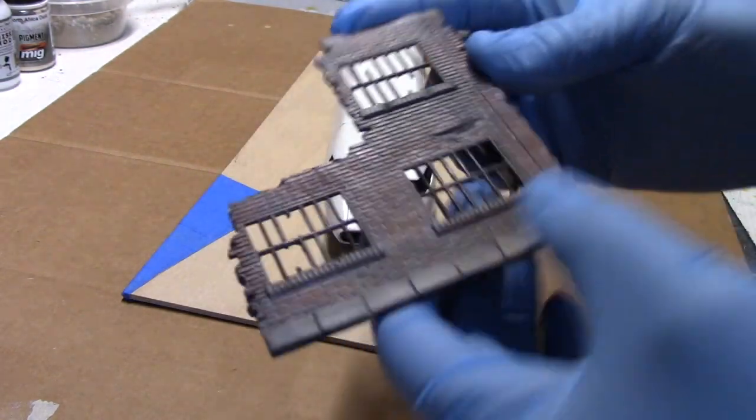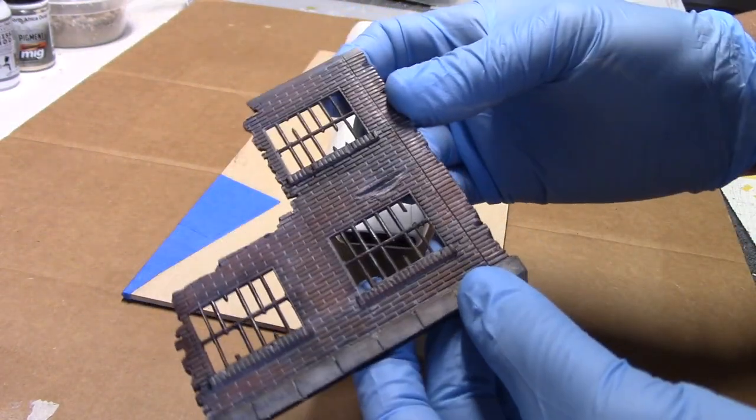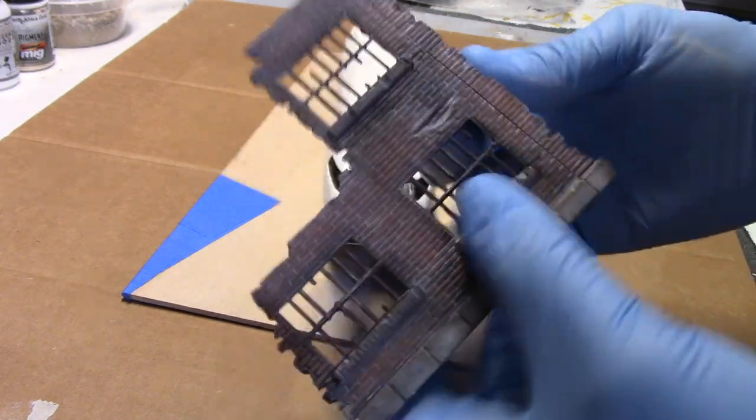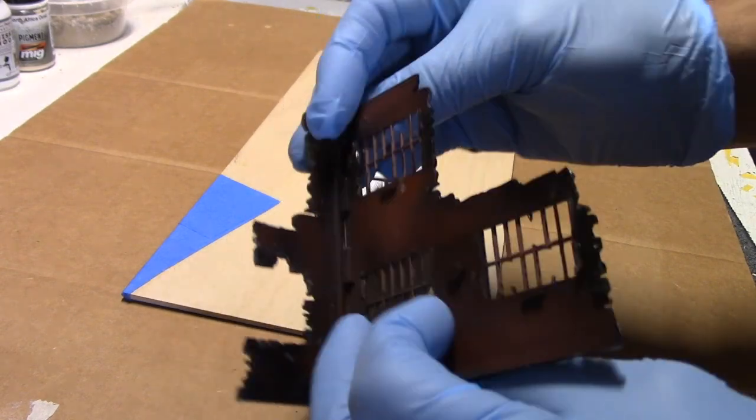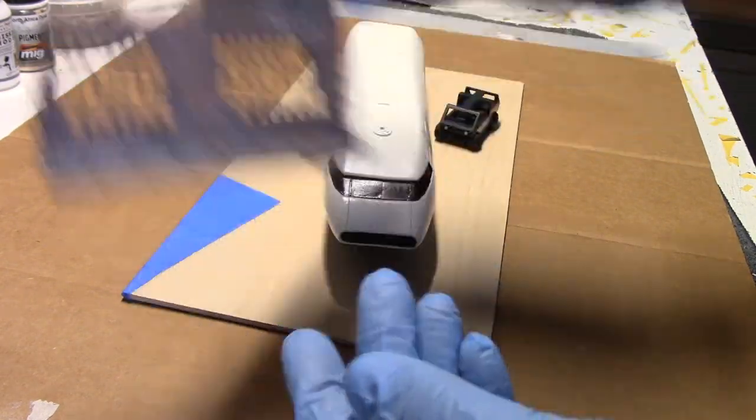So I had an old building that I had from a train set and so I decided just to kind of mess with it, rip it apart, and try to paint it to make it look used and worn and aged.